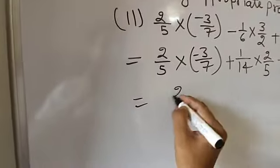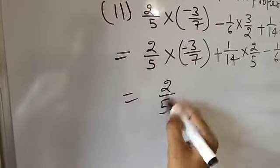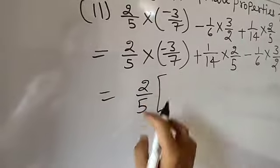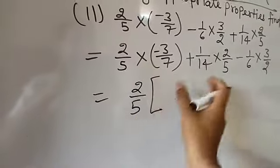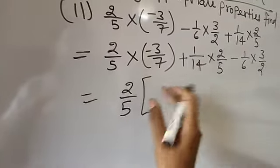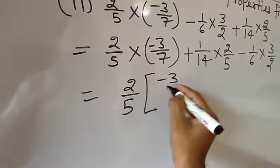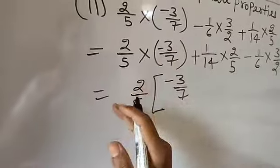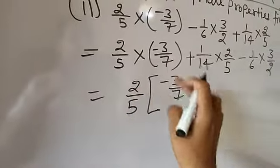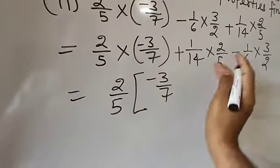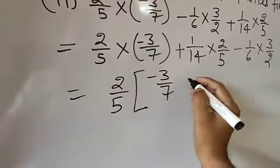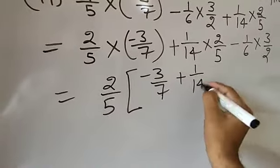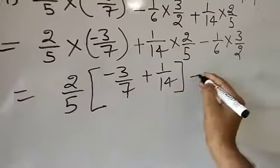Here 2 by 5 is present in both terms, so I can take 2 by 5 common. After taking 2 by 5 common, here it will be minus 3 by 7, and here it will be 1 by 14. Bracket is closed.